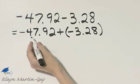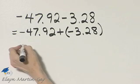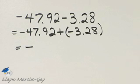Now, remember, we're adding two numbers with the same sign, so we add their absolute values, and we keep the common sign.